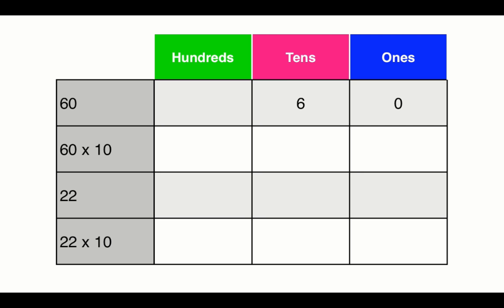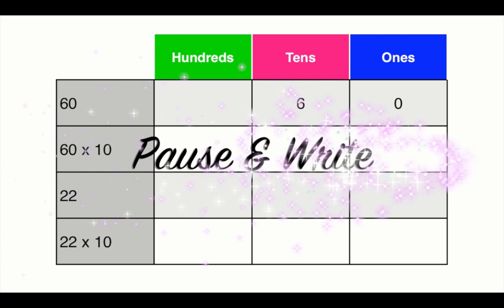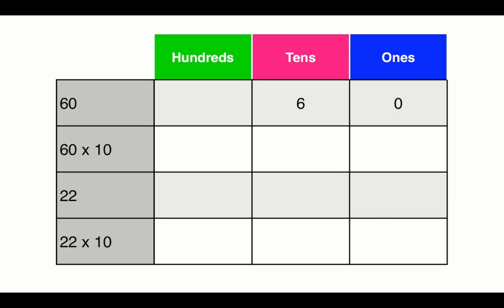Let's begin with the number 60 on our place value chart. Notice that the 6 is in the tens and the 0 is in the ones. Now we're going to shift everything over to the left as we multiply by 10. The 6 shifts from the tens to the hundreds, the 0 shifts from the ones to the tens, and the additional 0 from the 10 goes into the ones column. Therefore, 60 times 10 equals 600.